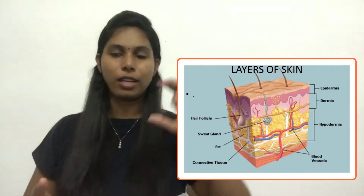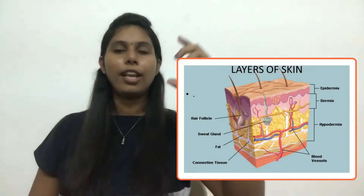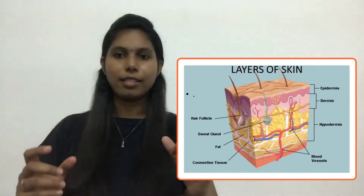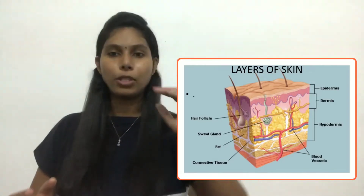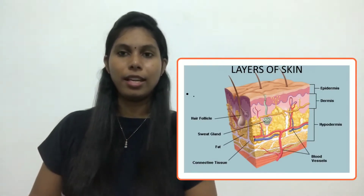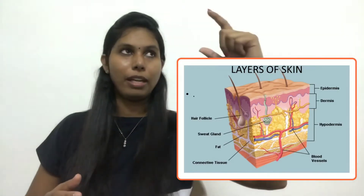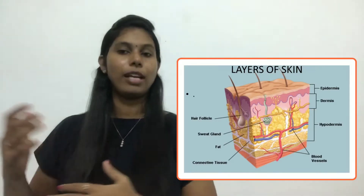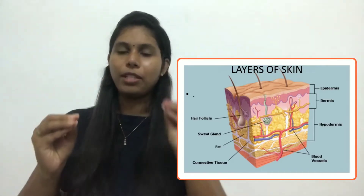For pressure sores, stage one affects only the epidermis, appearing as redness. Stage two also affects the dermis — for example, a blister. Stage three affects the subcutaneous layer as well. Stage four involves muscles, tendons, and beyond. Understanding these skin layers is very important, and looking at the picture will give you a clear idea.